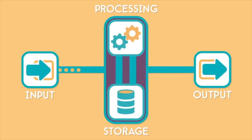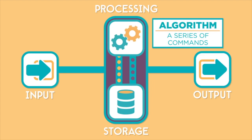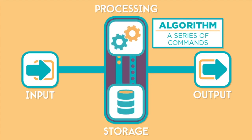The next step is the storage and processing of this information. All of these inputs give information to the computer that needs to be stored in memory. After the information is stored, it goes through the processor, which uses algorithms to change or manipulate the information to eventually produce an output. These algorithms are just a series of commands that help the processor manipulate information.